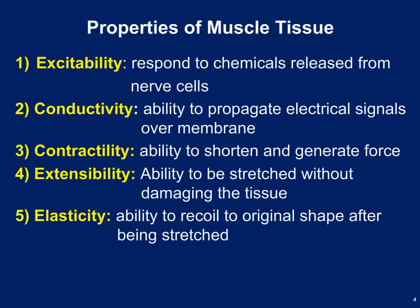Muscle tissue, particularly skeletal muscle tissue, also has some unique properties. These include excitability — muscle tissue is excitable. If we expose it to a neurotransmitter like acetylcholine, it will forcefully contract. By excitable, we mean that it's responsive to outside stimulus, specifically chemical stimulus in the form of neurotransmitters.